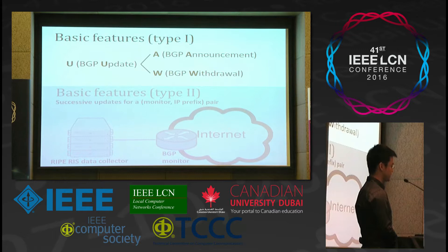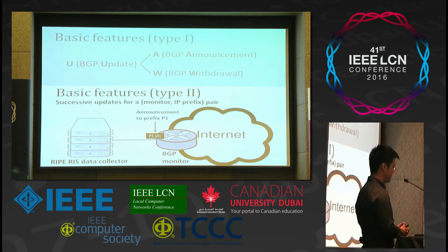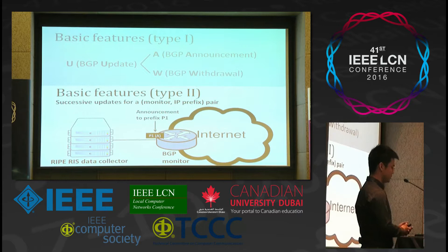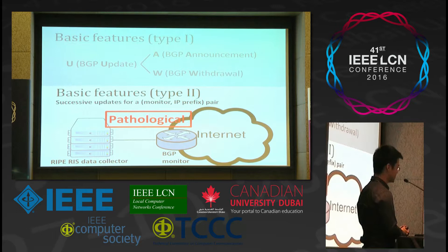The first type of basic features includes BGP update, BGP announcement, and BGP withdrawal. The second type of basic features are successive updates for a monitor-IP-prefix layer. For example, in the figure, there is a data collector on the left and the BGP monitor on the right. At a time point, the BGP monitor sends an announcement for prefix P1 to the collector. Later, it sends the same announcement to the same collector for the same prefix. The two announcements are called same-monitor, same-prefix messages — they are duplicate announcements, thought to be pathological.